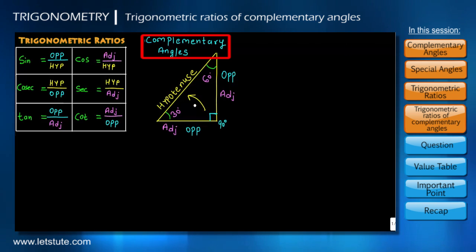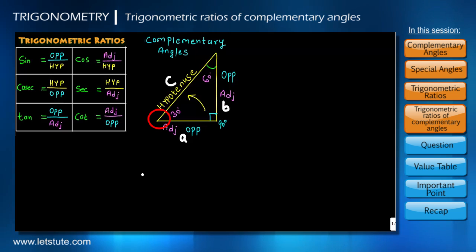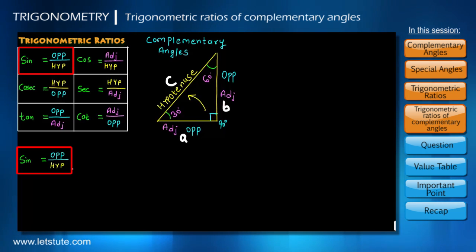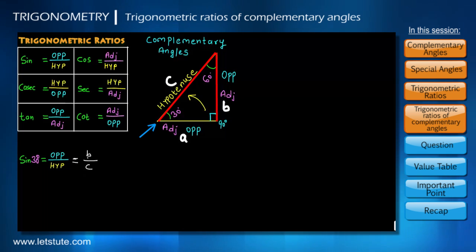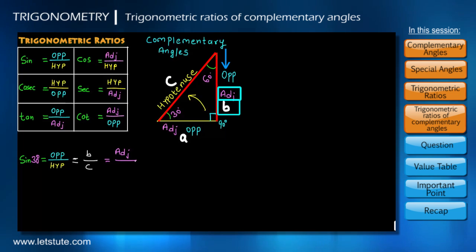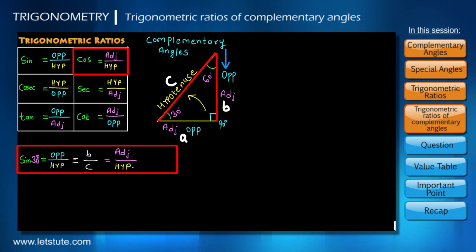Let us give values to the three sides as A, B, and C. If I first consider the 30 degrees angle, sin is the ratio of opposite side to hypotenuse, so sin 30 equals B upon C, because B is the opposite side and C is the hypotenuse for 30 degrees. Now if we look at side B from the 60 degrees angle, the same side B is the adjacent side for 60 degrees. Since C, the hypotenuse, is the same for all angles, and adjacent to hypotenuse deals with cos, we can see the value of sin 30 is exactly the same as the value of cos 60.